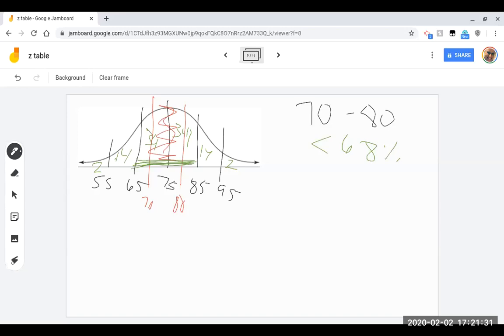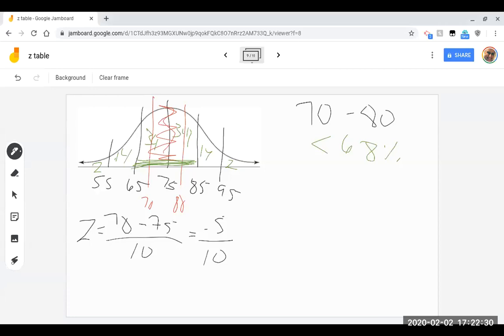So if I'm going to calculate the Z-score for the 70, we're going to take that 70 minus the mean, which is 75, divided by the 10. That's going to be a negative 5 divided by 10. So you can't forget that negative piece. 70 minus 75 is going to be negative. So you want to make sure that you don't disregard that.